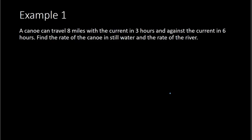So example 1, we have a canoe can travel 8 miles with the current in 3 hours and against the current in 6 hours. Find the rate of the canoe in still water and the rate of the river. For these kind of problems, we are dealing with rate and we're dealing with time, and so what I want to do is use my distance formula that says we have distance equals rate times time.